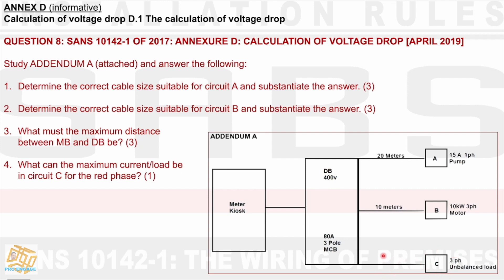Determine the correct cable size suitable for circuit A and substantiate your answer. It also says, determine the correct cable size suitable for circuit B and substantiate your answer. It also says, what must the maximum distance between MB and DB be? And also 8.4 says, what can the maximum current or load be in circuit C for the red phase?